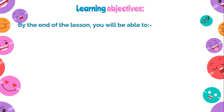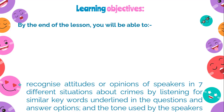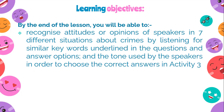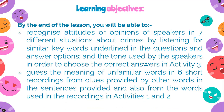Before we start, I would like to share our learning objectives for today's lesson. By the end of the lesson, you will be able to recognize attitudes or opinions of speakers in seven different situations about crimes, by listening for similar keywords underlined in the questions and answer options, and the tone used by the speakers, in order to choose the correct answers in Activity 3. You will also be able to guess the meaning of unfamiliar words in six short recordings from clues provided by other words in the sentences and from the words used in the recordings in Activities 1 and 2.